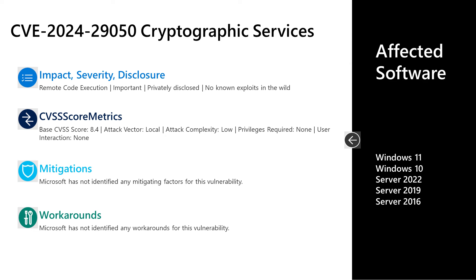Next is CVE-2024-29050, an important remote code execution vulnerability in the cryptographic services component of Windows. This was privately disclosed to Microsoft with no known exploits in the wild. It has a base score of 8.4, with a local attack vector, low attack complexity, no privileges required, and no user interaction required. For successful exploitation, a malicious certificate needs to be imported onto an affected system — a bit of a speed bump. The attacker could upload a certificate to a service that processes certificates, or convince an authenticated user to import one.